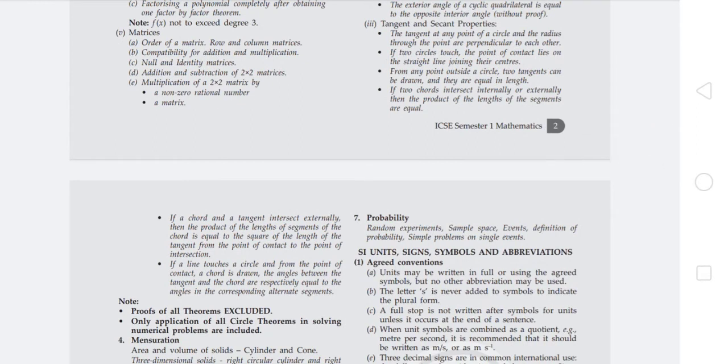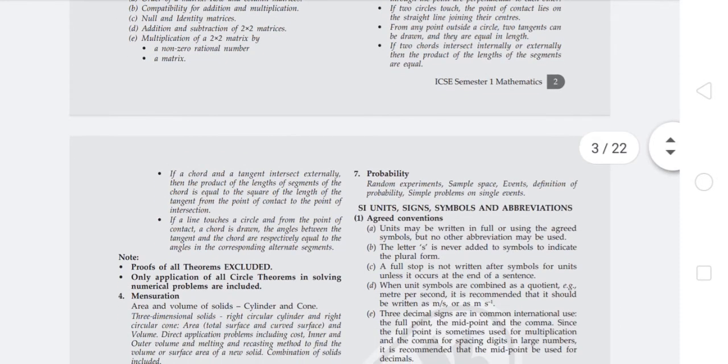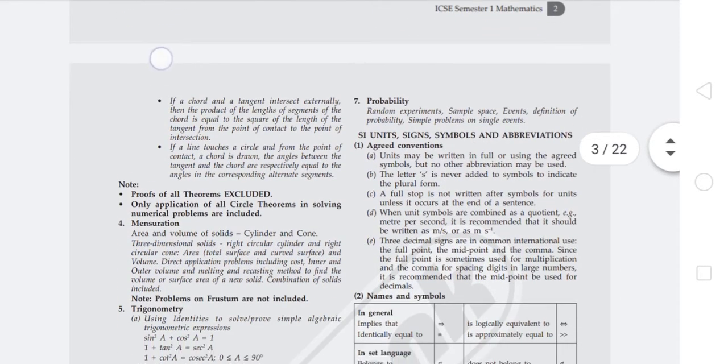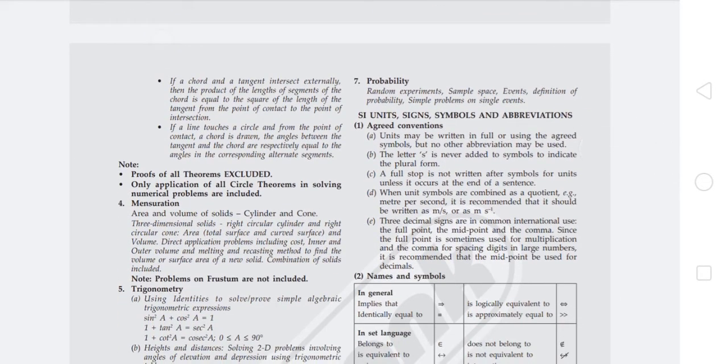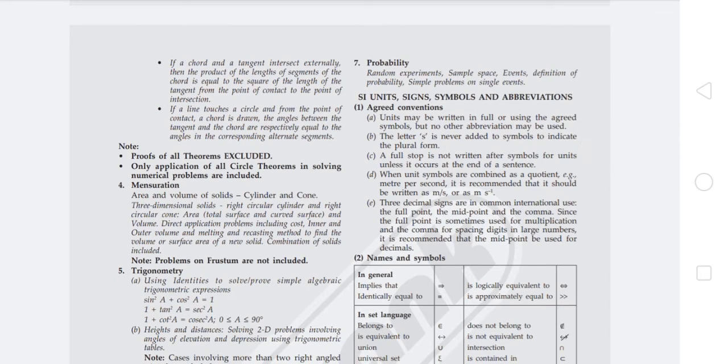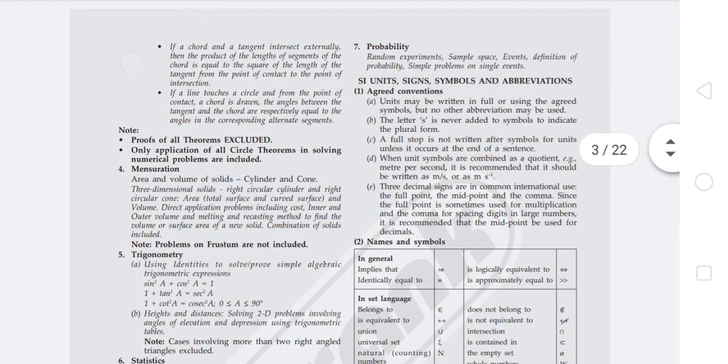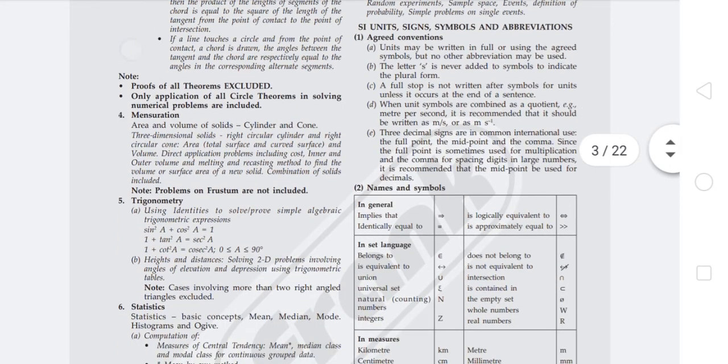If two chords intersect internally or externally, then the product of the lengths of the segments are equal. If a chord and tangent intersect externally, the product of the lengths of segments of the chord equals the square of the length of the tangent from point of contact to point of intersection. If a line touches a circle and from the point of contact a chord is drawn, the angles between the tangent and chord are respectively equal to the angles in the corresponding alternate segments.